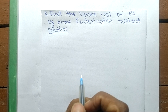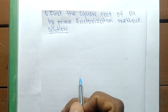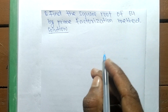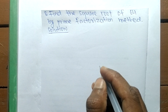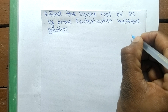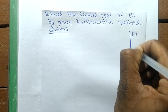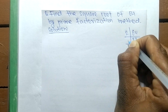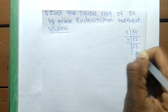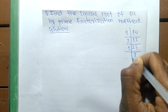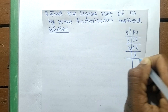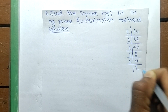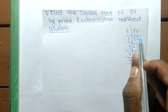Today we shall learn to find the square root of 64 by the prime factorization method. First, we find out the prime factors of 64: 2 times 32, 2 times 16, 2 times 8, 2 times 4, and at last 2 times 2.